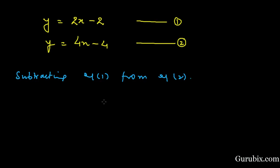What we get? Y minus Y is equals to 4X minus 4 minus 2X minus 2. This means 4X minus 4 minus 2X plus 2. Here is 0. We have 2X minus 2.